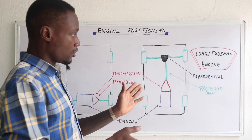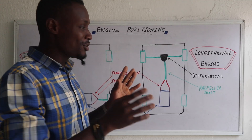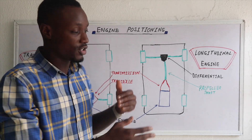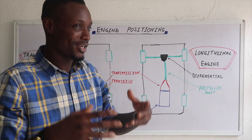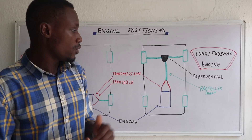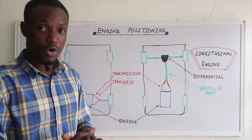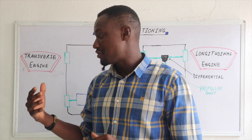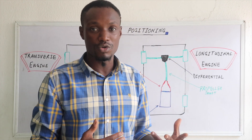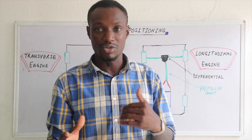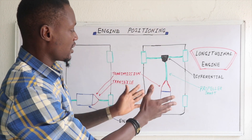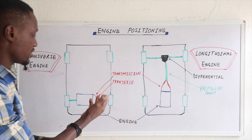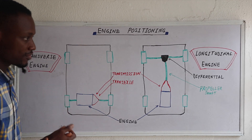The longitudinal engine positioning is normally found in rear-wheel drive vehicles or high-performance vehicles such as Mercedes-Benz, BMWs, Lamborghinis, and the rest. We also find this layout in four-wheel drive vehicles. Please see my video on all-wheel drive and four-wheel drive to understand the difference between them. So this layout is found mainly in rear-wheel drives and four-wheel drives, while the transverse layout is found in front-wheel drive and all-wheel drive vehicles.